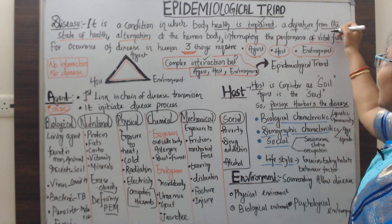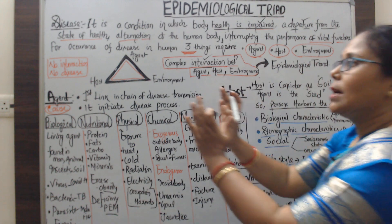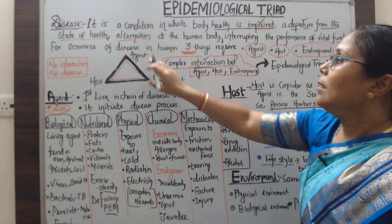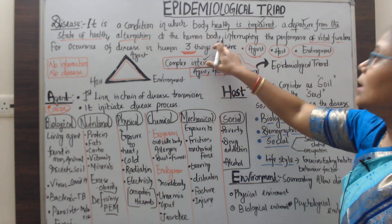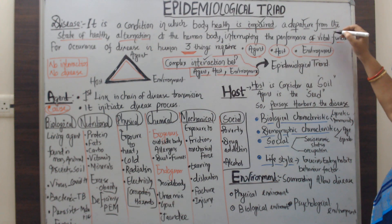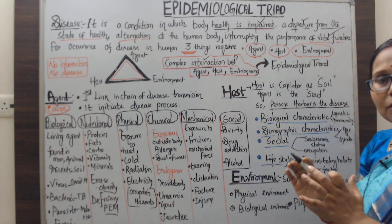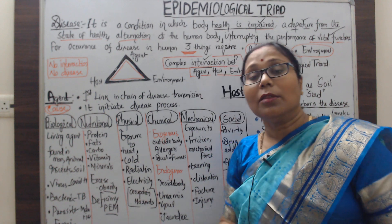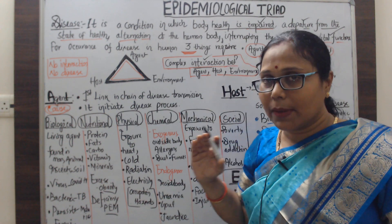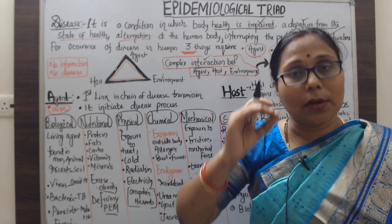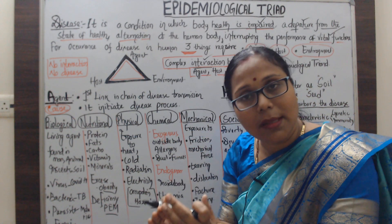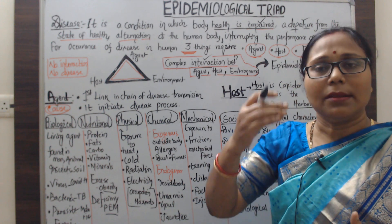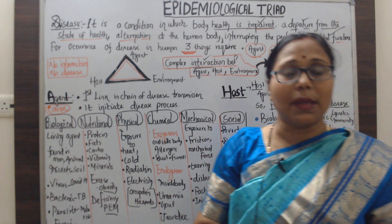So disease is described as: first, the condition in which the body's health is impaired; second, departure from the state of health from normal to abnormal; and third, alteration of the human body's vital functions — those functions carried out in our body are disturbed. On the basis of these three points, we call a person to be in a disease condition.